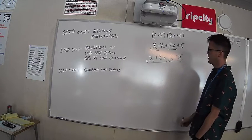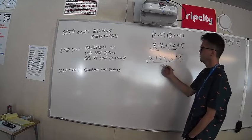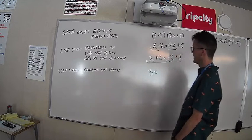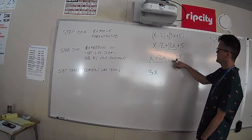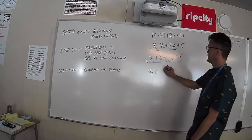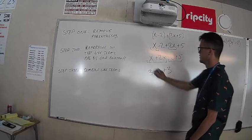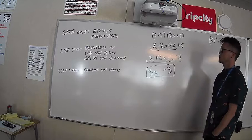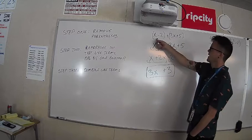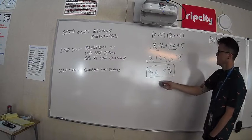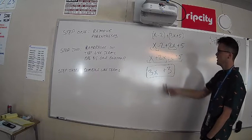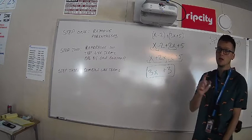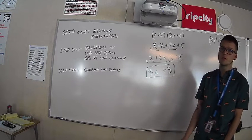Step three, combine like terms: one x plus two x gives three x. Then negative 2 plus 5 equals 3. So when we add the two binomials (x minus 2) and (2x plus 5) together, the answer is 3x plus 3.